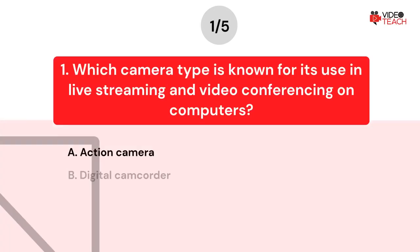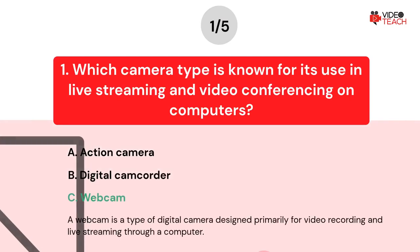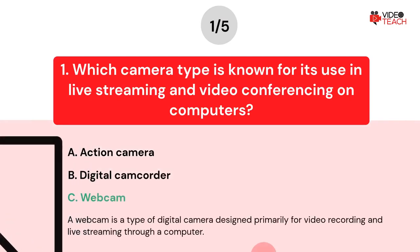The correct answer is Option C. A webcam is a type of digital camera designed primarily for video recording and live streaming through a computer.